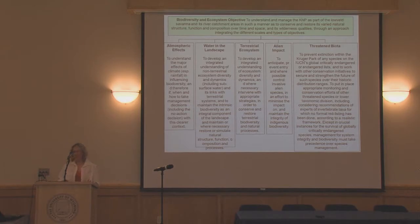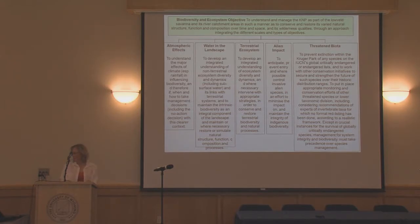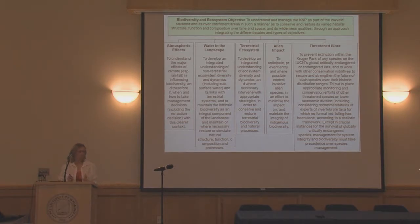In Kruger there are five main research themes under the biodiversity objective: atmospheric effects — basically understanding climate and gathering data; water in the landscape and our river systems; terrestrial ecosystems and animal interactions with larger ecosystem activities; alien impact; and threatened biota. Because we are a small group, these are the main themes our scientists can focus on, and we also make use of outside scientists to assist.